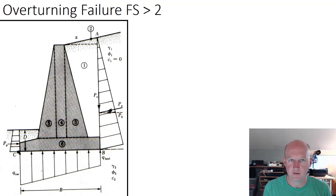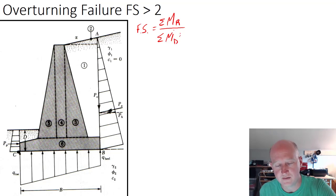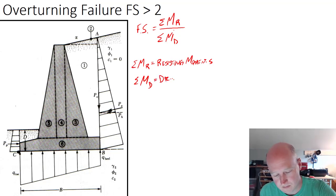The next failure mechanism is overturning. The factor of safety in overturning is the sum of the moments that are going to resist failure over the sum of the moments that are going to drive failure. If we think about what are the resisting moments, each of these forces that I'm going to draw have a corresponding moment arm.